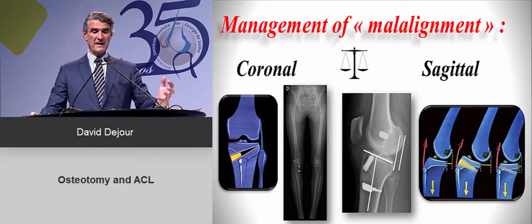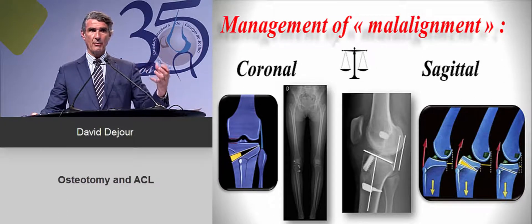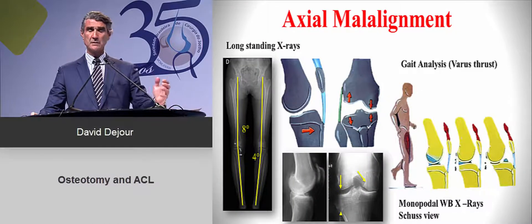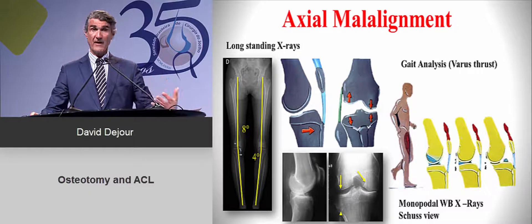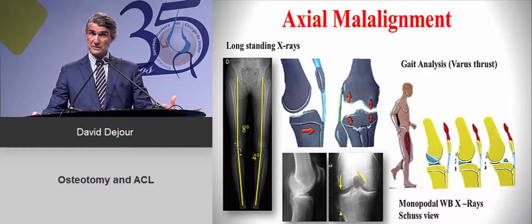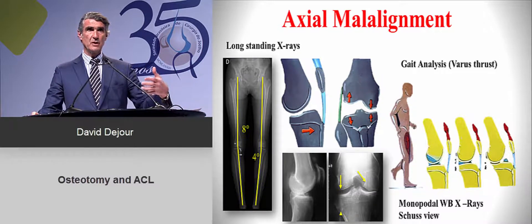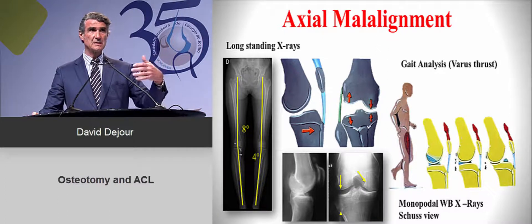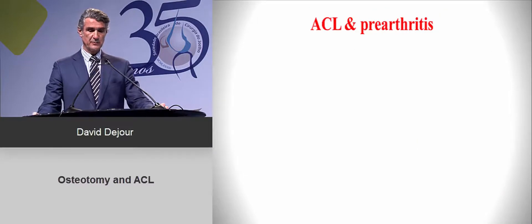How do you manage malalignment? You have malalignment in the AP view and in the sagittal, and both are important and may both need correction. For axial malalignment, you need long-standing X-rays to quantify the varus or valgus deformity. You look at joint line narrowing and osteophytes on the notch. It's also very important to watch the patient walk in your office — you can see if they have an asymmetric varus deformity and a varus thrust, which is important to quantify.